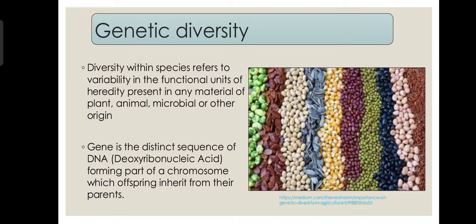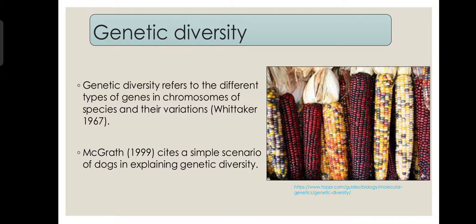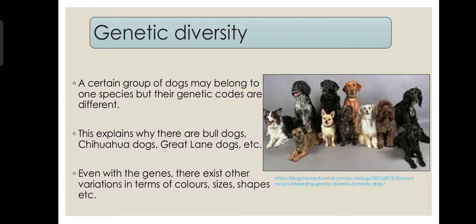Two siblings of the same parents are not similar — that is due to genetic diversity. Genetic diversity is the variability in genetic material. According to Whittaker, genetic diversity is the diversity of genes present in chromosomes of a species. This is simply explained by the example of dogs: a group of dogs may belong to a single species, but their genetic codes are different, which is why different breeds of dogs exist. Even within genes, other variations exist in terms of coat color, size, shape, etc.